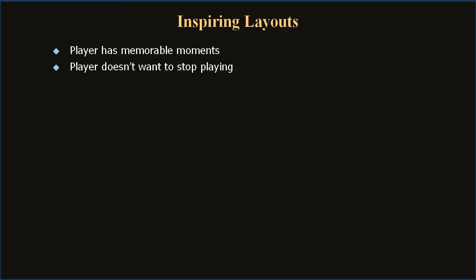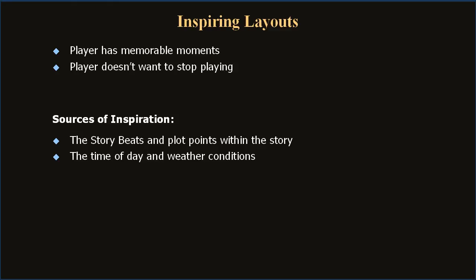Inspirations for creating exciting layouts can come from a variety of sources: the story beats and plot points, the time of day and weather conditions, key landmarks and architecture, movies, books, and other games. Creating wonder in levels involves long paths, imposing landmarks, upward slopes, and changes in scale. Creating a sense of triumph demands terminal points of interest — POIs for big climactic events featuring foreshadowing and level-long approaches to the target. The plot in a video game corresponds to the level geometry much as a musical score is composed: ebbs and arcs, highs and lows, reflecting the hero's emotional state and building to a climax.